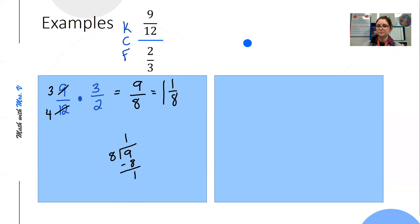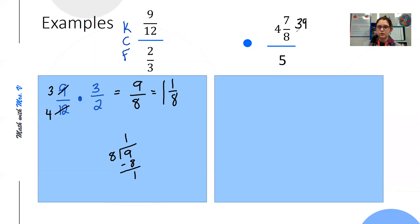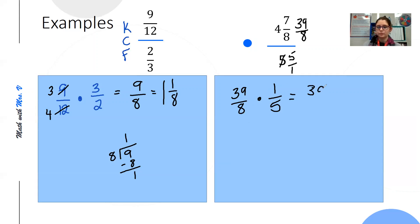Okay, last example. This one has a mixed number, and there are no shortcuts when solving with mixed numbers — we have to turn it into an improper fraction. Eight times four is thirty-two, thirty-two plus seven is thirty-nine, so thirty-nine over eight. I put my five over one, then use keep, change, flip: keep thirty-nine over eight, change the division bar into multiplication, flip my second fraction over. Nothing can be simplified, so we multiply: thirty-nine times one is thirty-nine, and eight times five is forty. So thirty-nine over forty is my final answer.